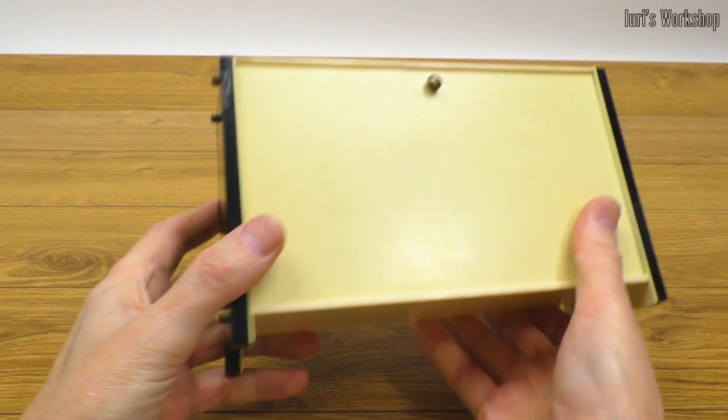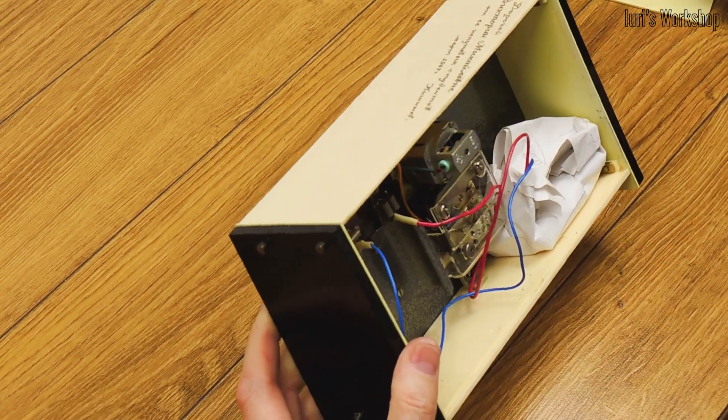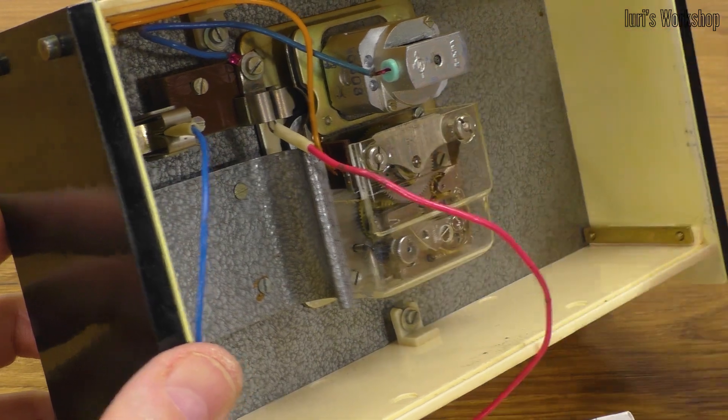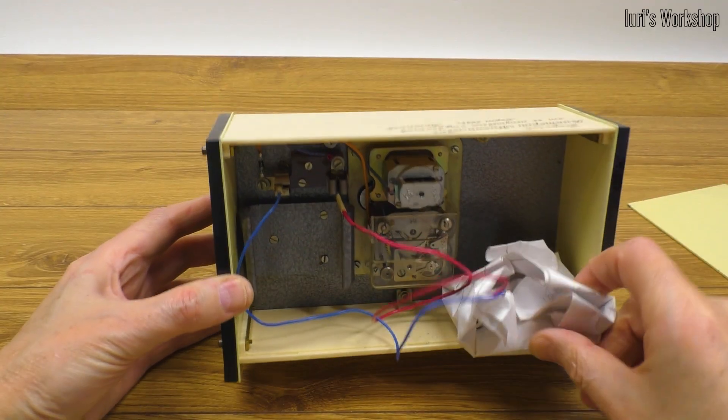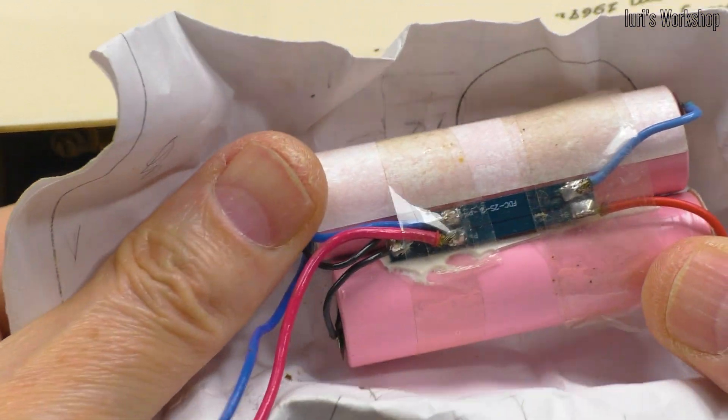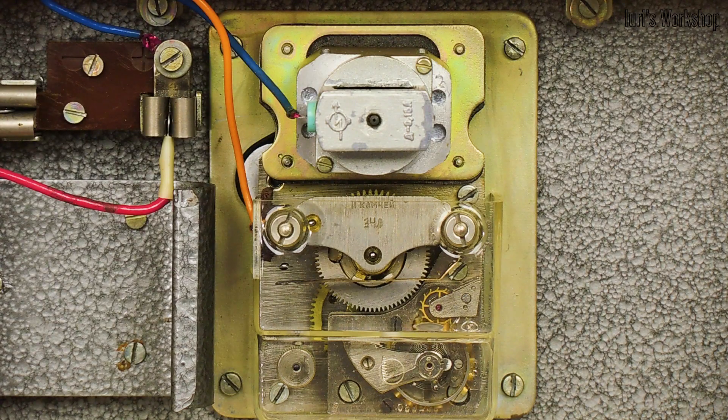The electric motor that cocks the clockwork spring in this antique clock consumes a lot of energy. To extend the life of the watch between battery cycles, I used two cells of the battery at once. And this is how it works.